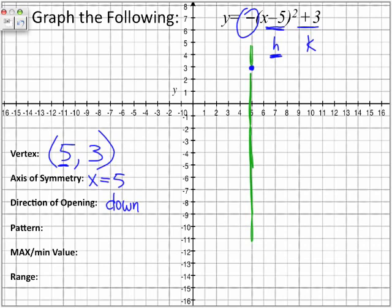What is the pattern? Well, the pattern here, because the a value is 1, the pattern remains as 1, 3, 5. So let's actually plot the next points. We know it's 1, 3, 5, but going downward. So we're going to move to the right one, down 1. We're going to move to the right one, and down 3. Plot the next point. We are going to move to the right one, and down 5. That's 2, 3, 4, 5 points.